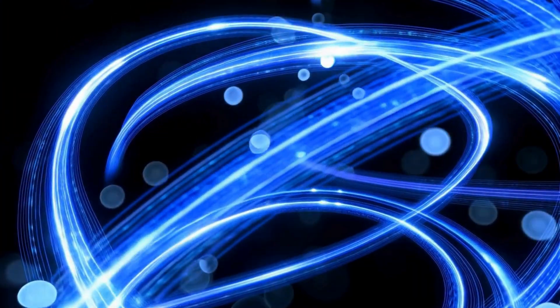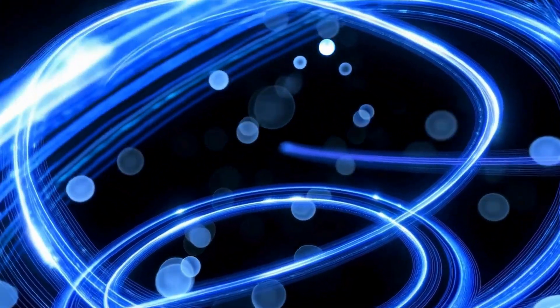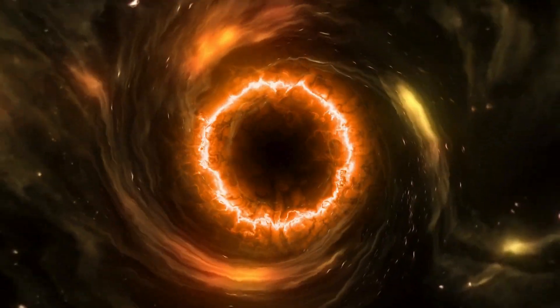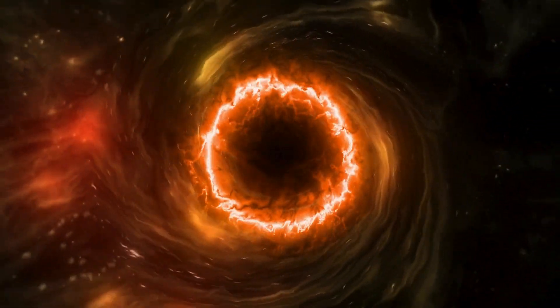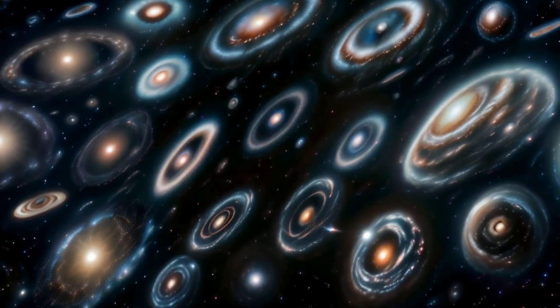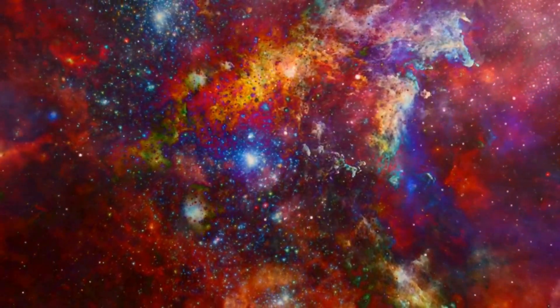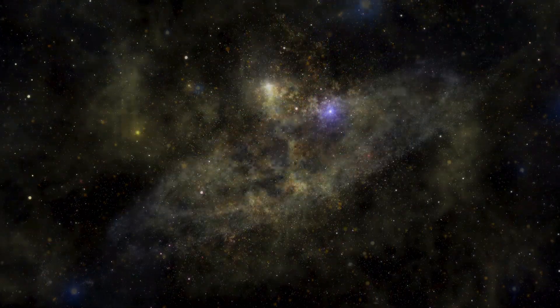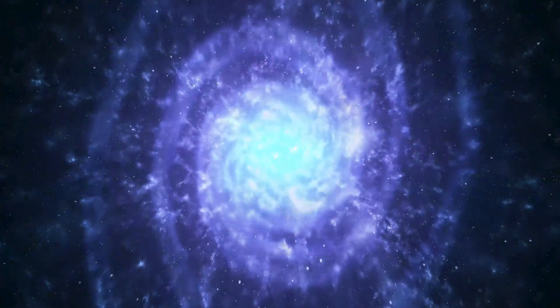Galaxies forming billions of years later should reflect this randomness, their rotations balancing out across the cosmos. But the observed preference for one spin direction suggests something else: a primordial influence, a directional force or structure that shaped the universe's infancy.